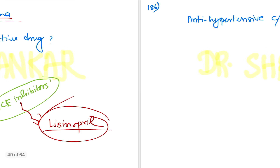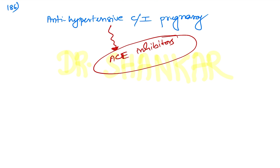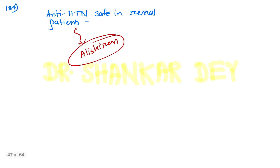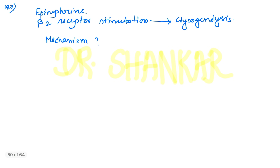Question number 186: antihypertensive contraindicated in pregnancy — definitely ACE inhibitors. ACE inhibitors were among the options and are contraindicated in pregnancy. Notably, antihypertensives were a repeated topic of choice for DC and NITPG examinations, with multiple questions asked from this topic.